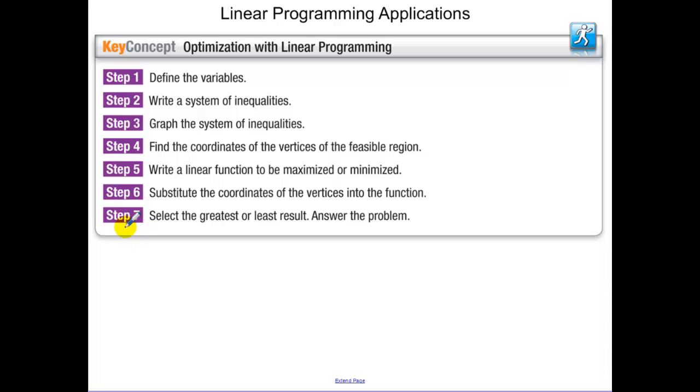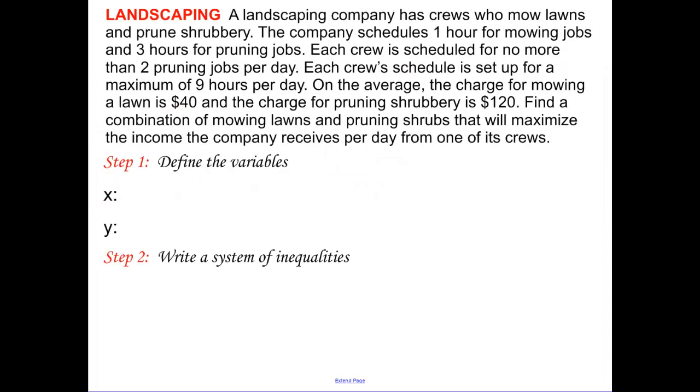Okay, linear programming applications. And please write down these steps. These steps are super important. We're going to define our variables, write a system of inequalities, and graph that system. We're going to find the coordinates of the vertices of our feasible region. We're going to write a linear function that's going to be maximized or minimized. We're going to substitute the coordinates into our function, and then select the greatest or least result.